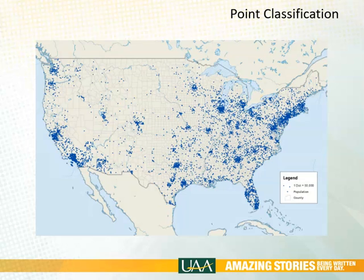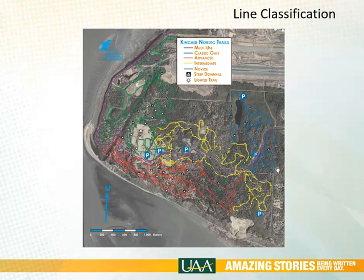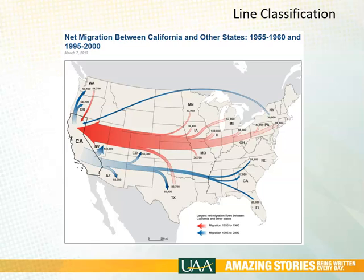Here is line data. This is a map that I made of ski trails in Kincaid that uses different colors — unique symbols — to show different difficulties of trails. You can also use graduated or proportional lines as well. Here is a map that shows migration between states, where the thickness of the line represents the number of people. It's a pretty good map and pretty easy to understand.